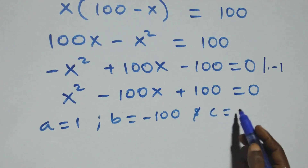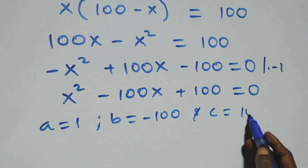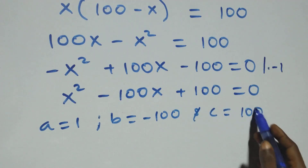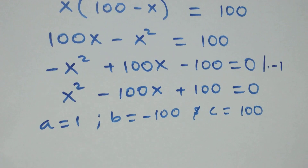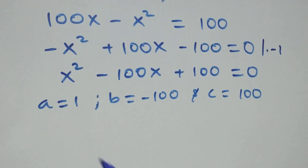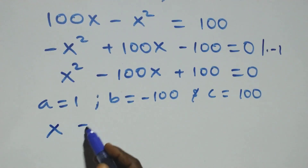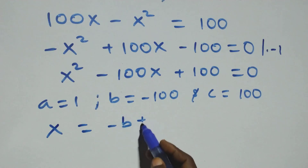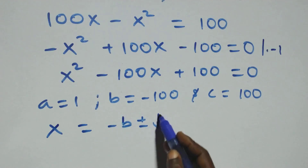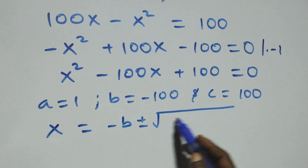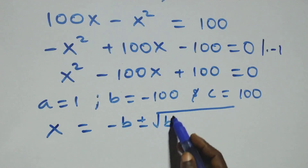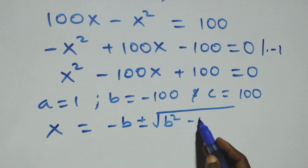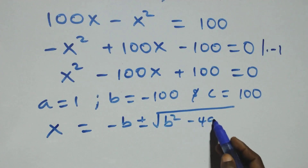We apply the quadratic formula, which is x equals to minus b plus or minus square root of b squared minus 4ac, all over 2a.